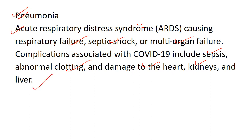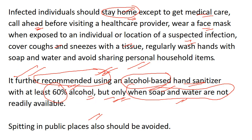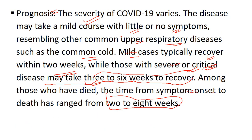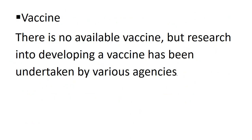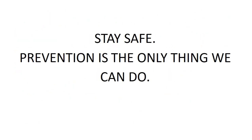In summary: COVID-19 can range from asymptomatic to mild cold-like symptoms, with mild cases recovering within two weeks and severe cases within three to six weeks. Death occurs only in a small fraction of cases. There is currently no available vaccine, and it may take a year or more to develop one, so prevention remains the best strategy.